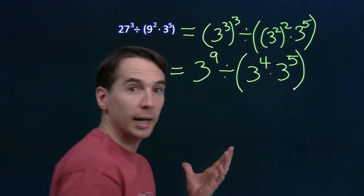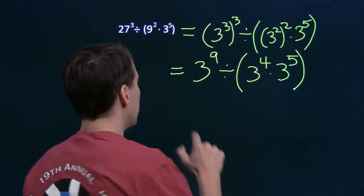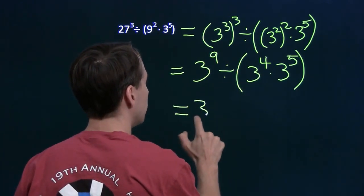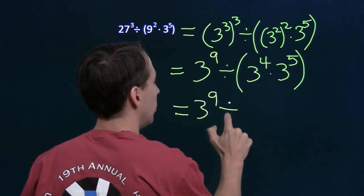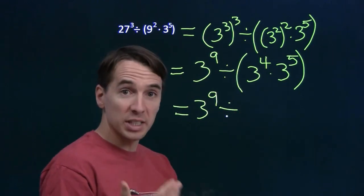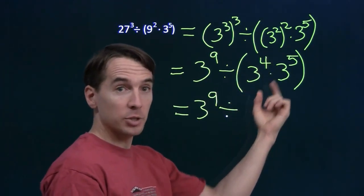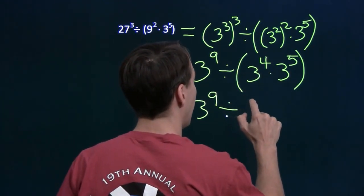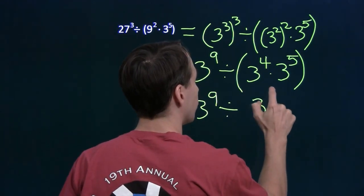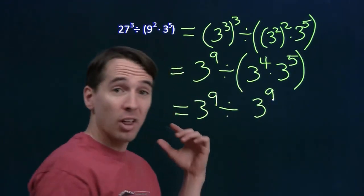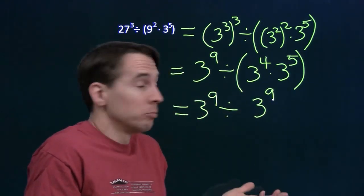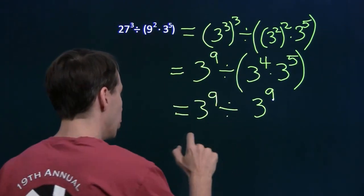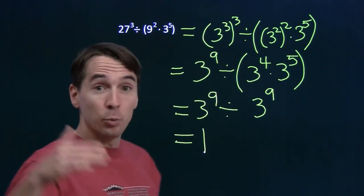And that looks a lot easier. We can go ahead and combine these two. When we're multiplying two powers with the same base, we just add the exponents. 3 to the 4th times 3 to the 5th, that's the total of 4 plus 5, or 9 3s. And now we have 3 to the 9th divided by 3 to the 9th. You divide a number by itself, you get 1. And we're done.